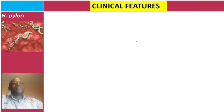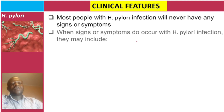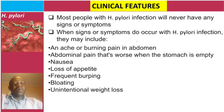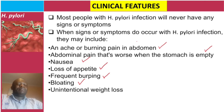Now let's talk about the clinical features. Most people with H. pylori infection will never show any signs or symptoms. But if symptoms occur, they may include an aching or burning pain in the abdomen, abdominal pain when the stomach is empty, nausea, vomiting, frequent burping, bloating, and unintentional weight loss.